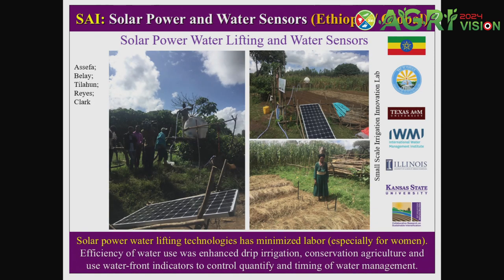Solar power is a big issue. Women are the ones lifting water from wells or nearby ponds — a very back-breaking task. We are using solar power for water lifting and delivering through drip irrigation systems. We also have a small sensor placed there to tell you when to stop, because too much irrigation is also a major issue. These simple innovations — solar power for water lifting, drip delivery, and a sensor to stop — improve water productivity and minimize waste. This is being applied in Ethiopia and Cambodia, but can be used globally.